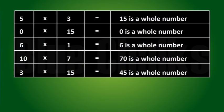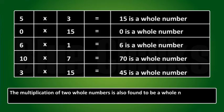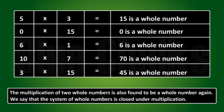Now, let us check whether the whole numbers are closed under multiplication. The multiplication of two whole numbers is also found to be a whole number again. We say that system of whole numbers is closed under multiplication.